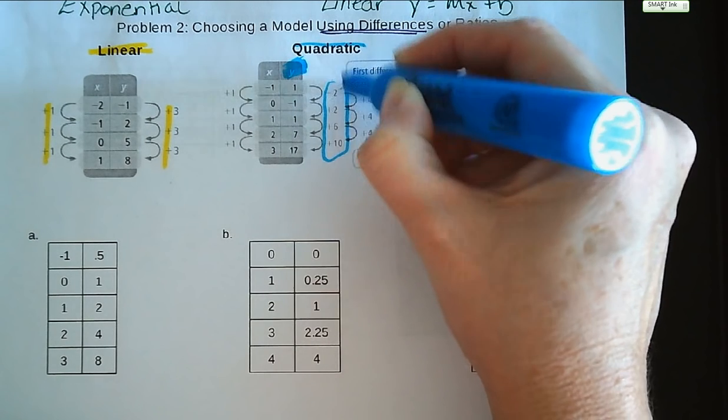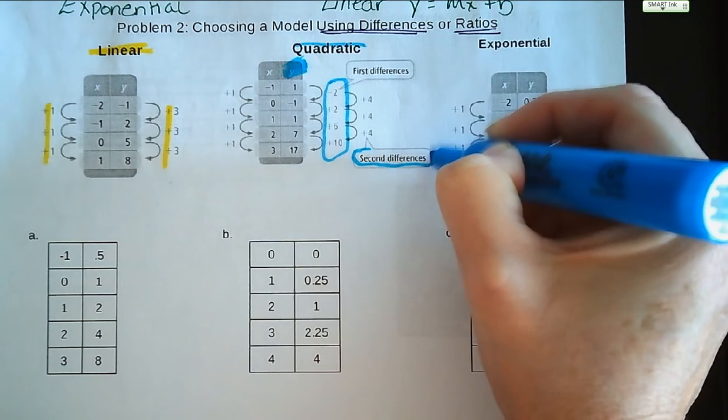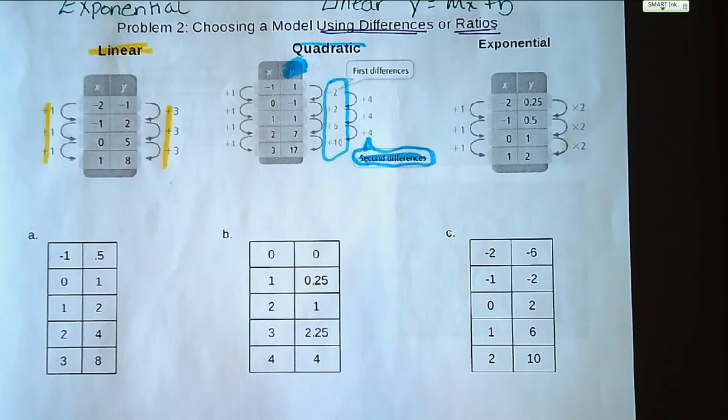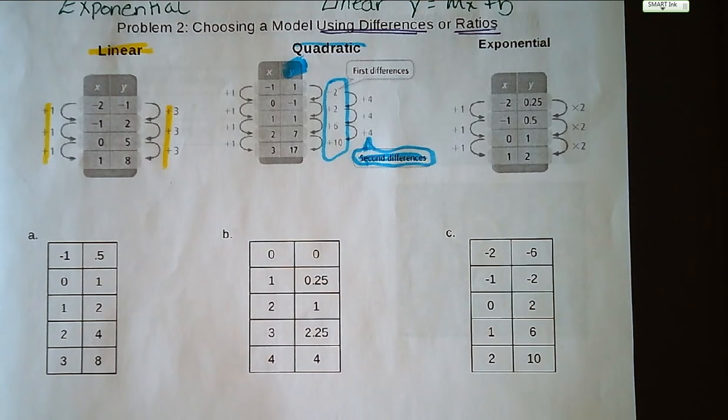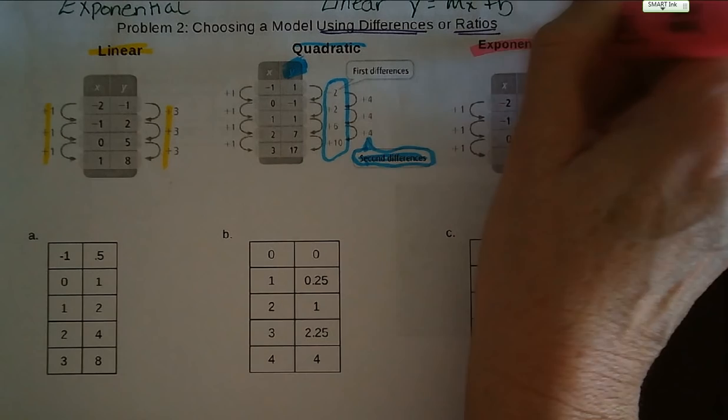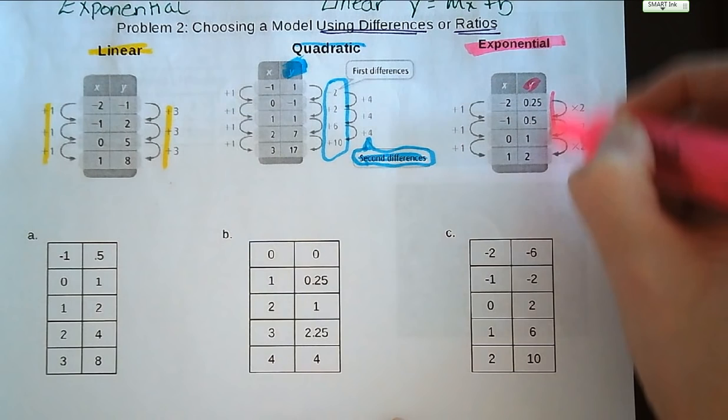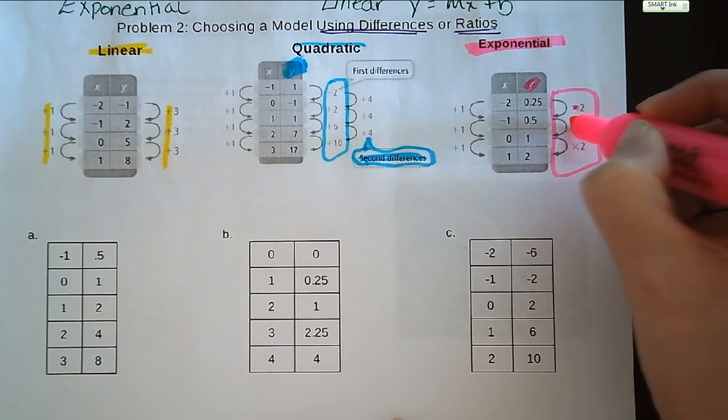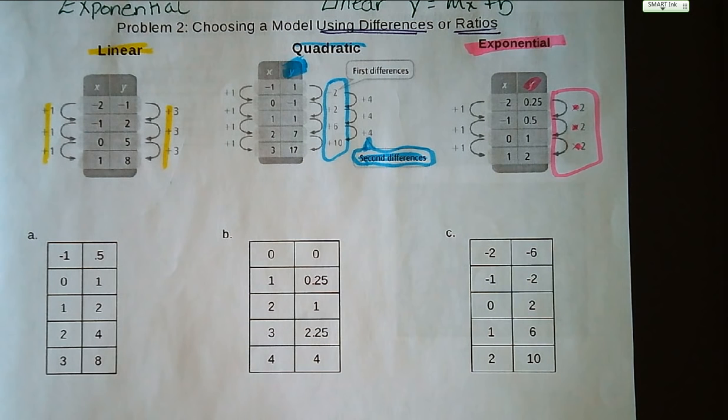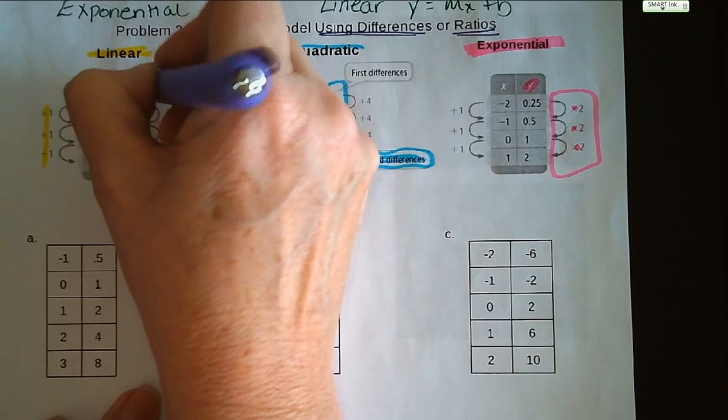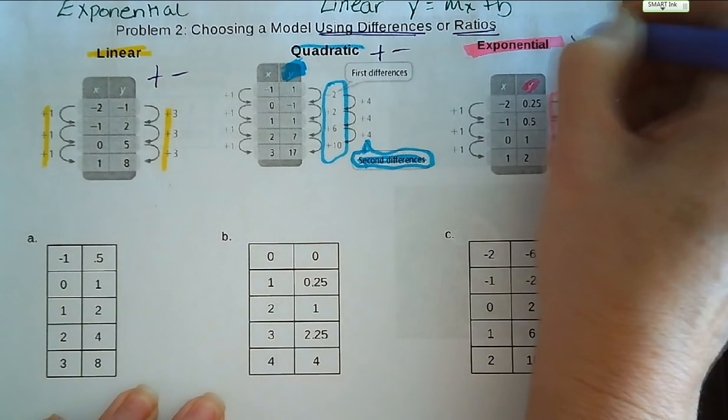And that actually holds true for all higher powers. So if the third difference is the same, it's cubic. Fourth difference, it'll be to the fourth degree, etc. And then lastly, we've got exponentials. This is where if we're multiplying by the same value every time, it's exponential. So adding or subtracting is linear or quadratic. Multiplying is exponential.